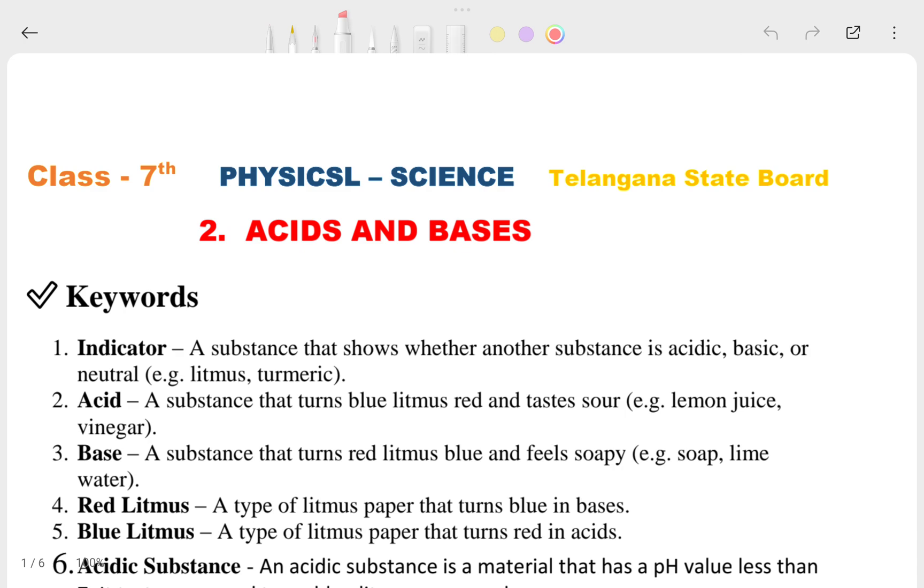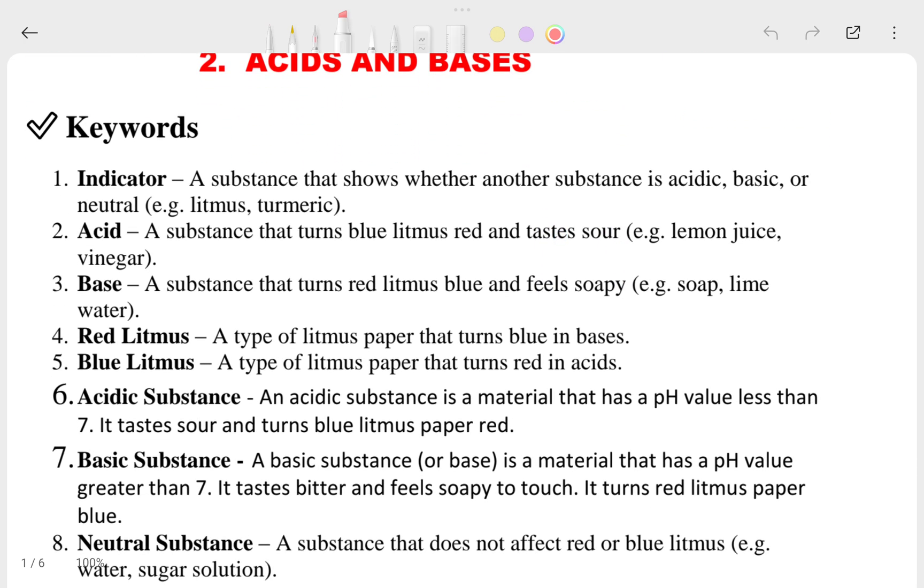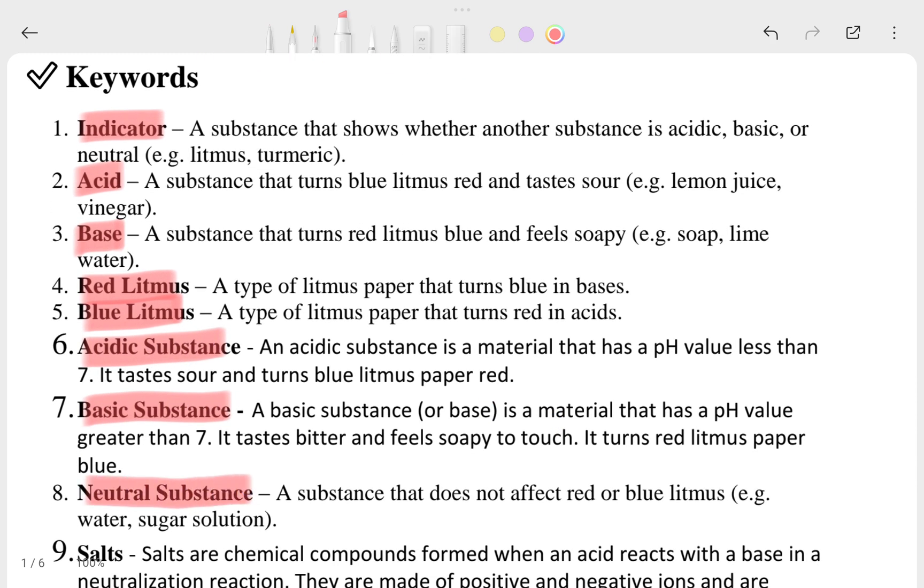Let's start with the keywords. If you have any doubt anywhere in this particular question answer, you can match with your textbook. These are the keywords which are given in your textbook also. The first is indicator. Indicators show whether a substance is acidic, basic, or neutral.